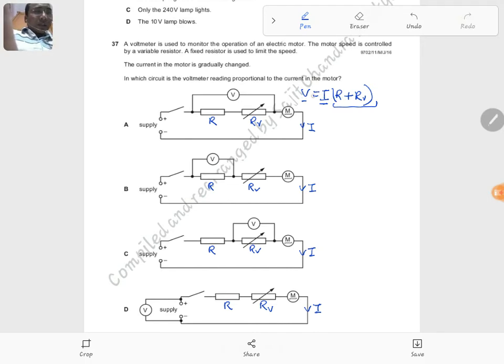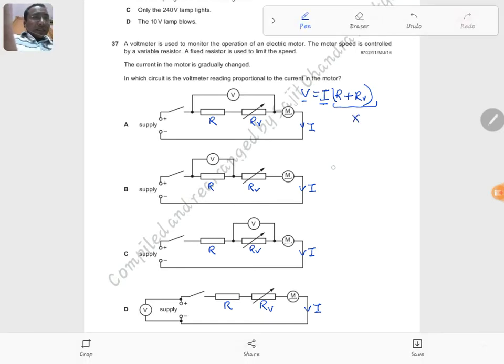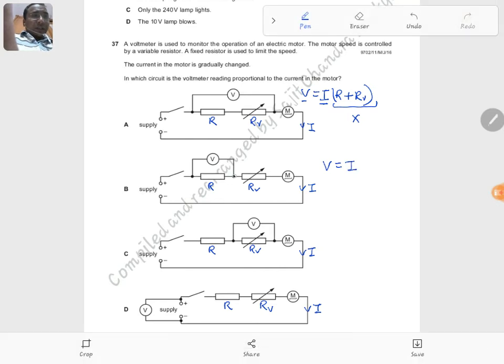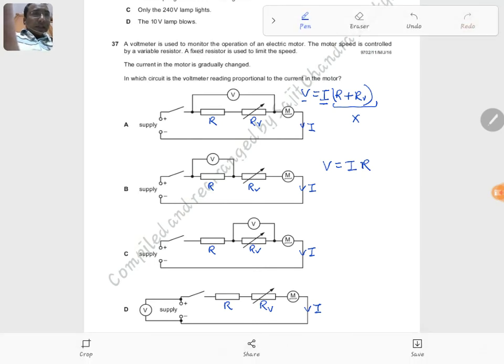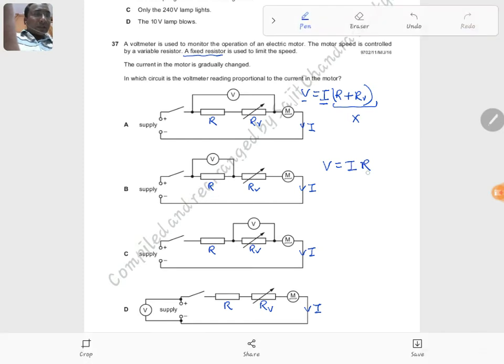That's why R plus RV is not fixed, and V and I are not going to be directly proportional to each other, so this choice is gone. In the second circuit, V will be equal to I times the resistance enclosed here, which is simply R. The question says that we have a fixed resistor here.